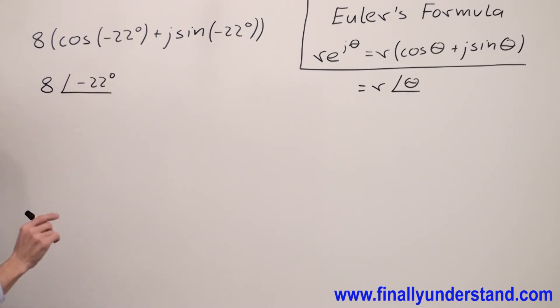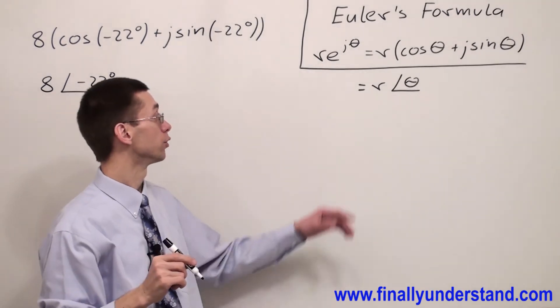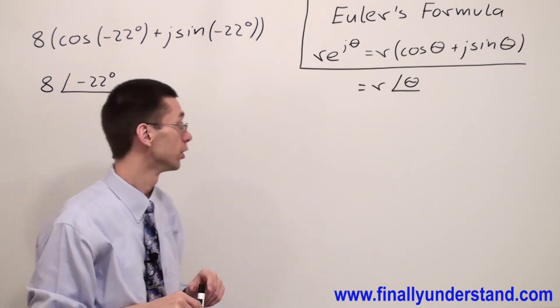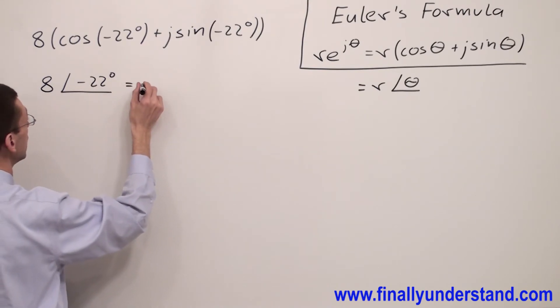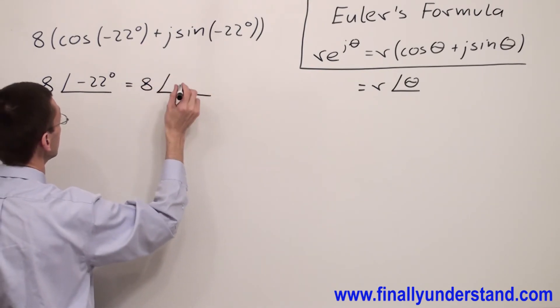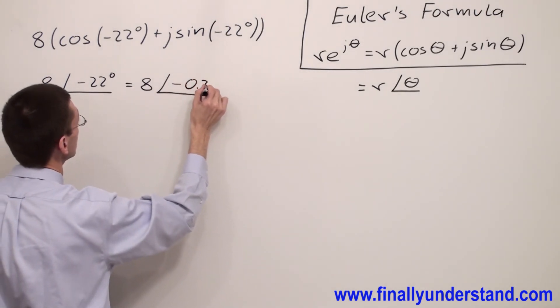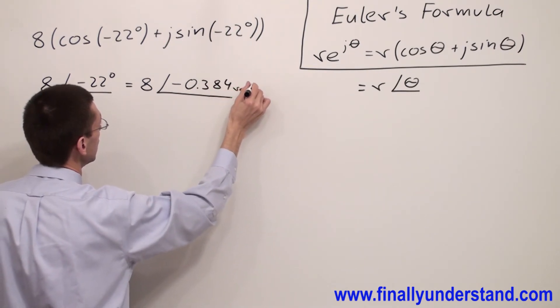But keep in mind, any time we talk about exponential form, we're supposed to express the angle in radians. So you have to convert negative 22 degrees to radians. This is equal to 8 at an angle of negative 0.384 radians.